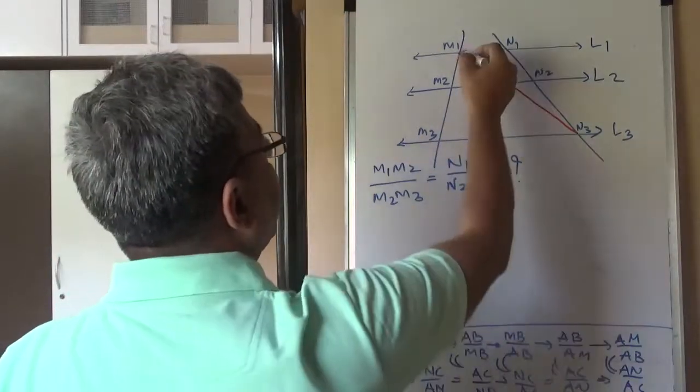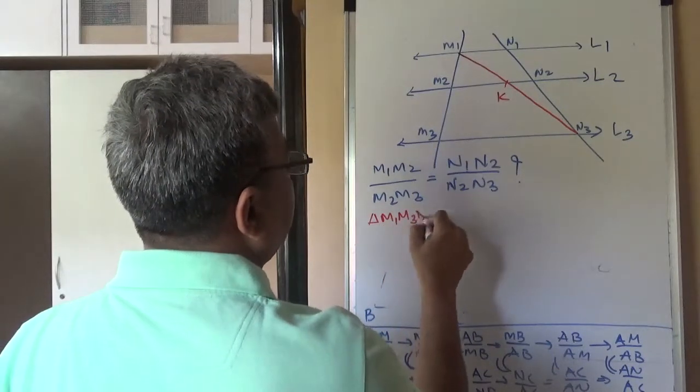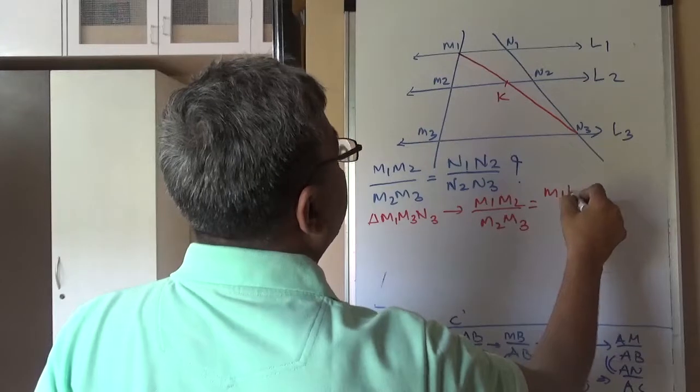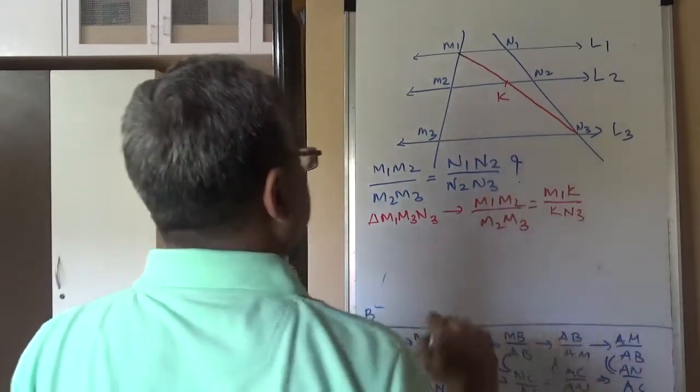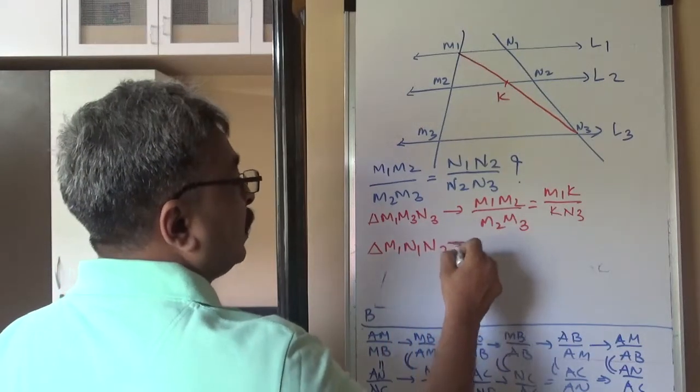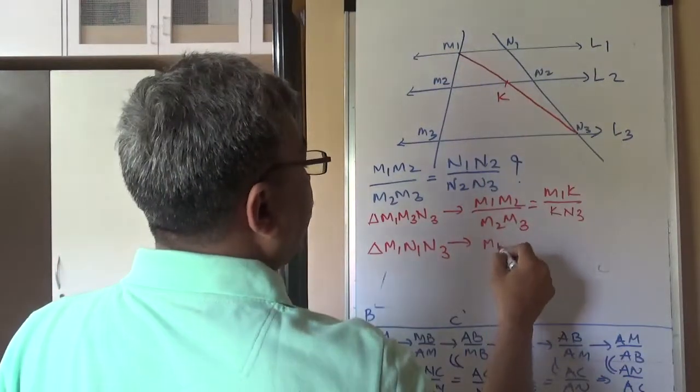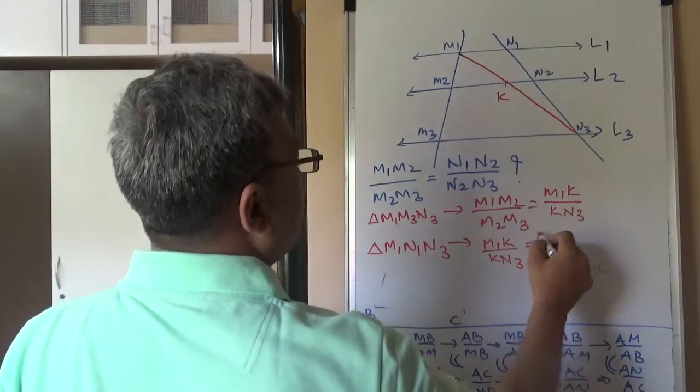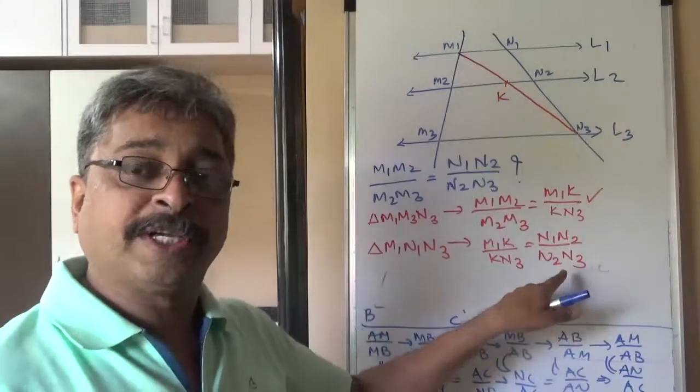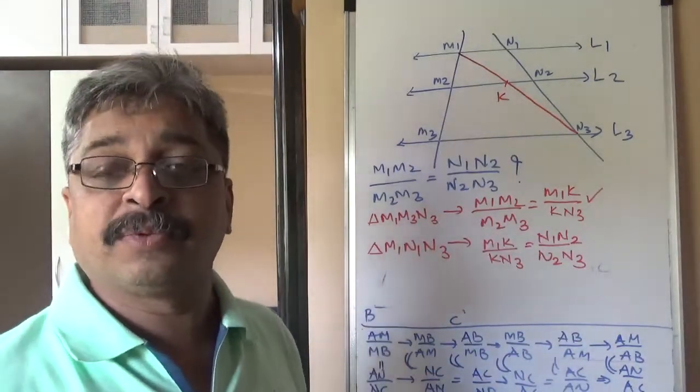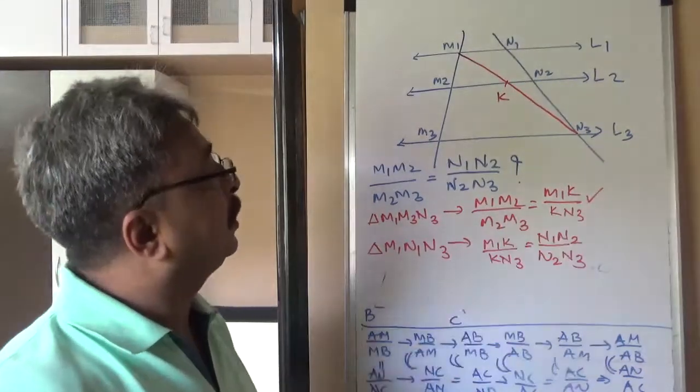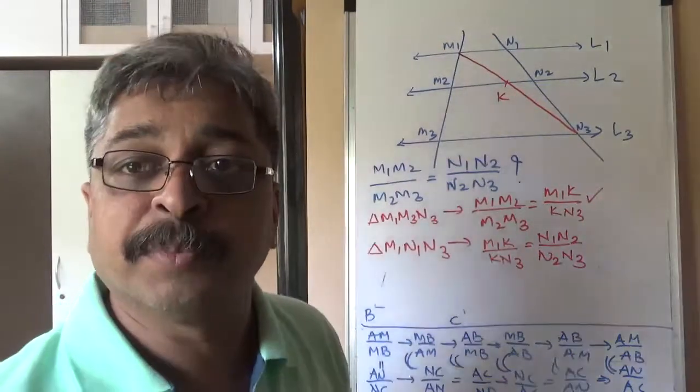The simplest method to do it is just to draw a diagonal. And call this point K. If we apply BPT to triangle M1M3N3, triangle M1M3N3 gives M1M2 upon M2M3 is equal to M1K upon KN3. If we apply extension of basic proportionality theorem to M1N1 and N3, basically we get, let me start with M1K upon KN3 will give me N1N2 upon N2N3. Now, you will observe that this ratio I have entered here and correspondingly wrote this ratio. I am actually using extension of BPT to write this particular two ratios. And this is BPT. But these two ratios are equal, therefore, these two ratios are equal. That is what is the simplest proof.